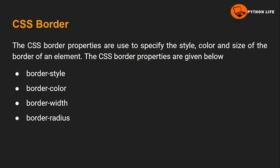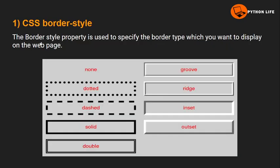In the next class we are going to execute practical examples. The first property is border-style. The border-style property is used to specify the border type which you want to display on the web page. It provides different keywords for the CSS border-style property and the name is used to specify the border style. There are many different types of border styles.